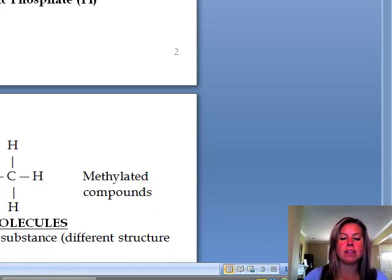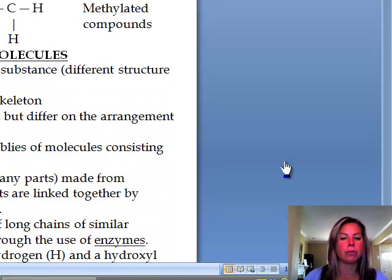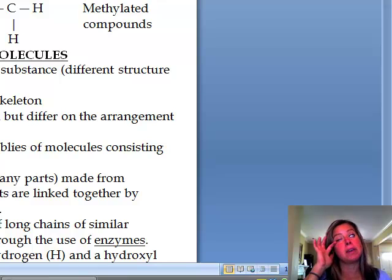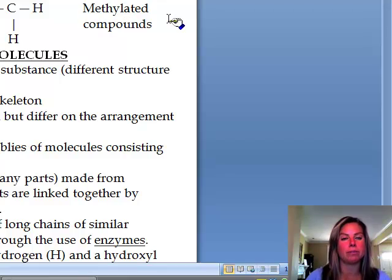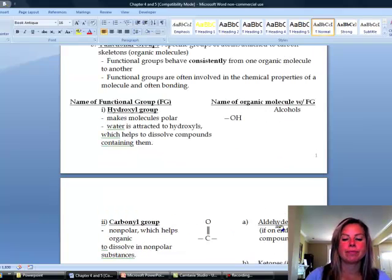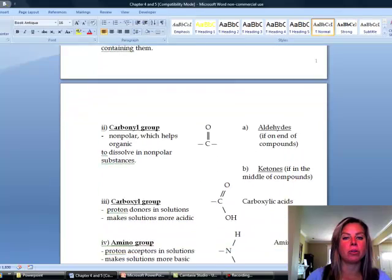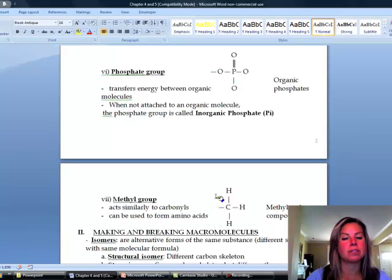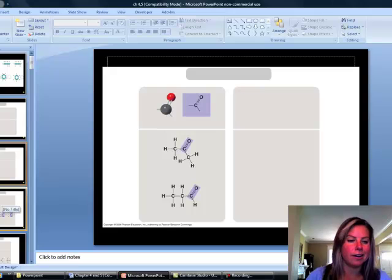Then the last group is going to be the methyl group, and the methyl group is going to act similarly to carbonyls. We'll go back and I'll show you what I mean by that. And so it's going to be carbon with three hydrogens coming off of it, and if it's attached to something, we call that a methylated compound. Now let's go back to carbonyls. There they are. And what we said the job of a carbonyl group was, was to make something nonpolar. So the same for that methyl group. It's going to do the same thing.